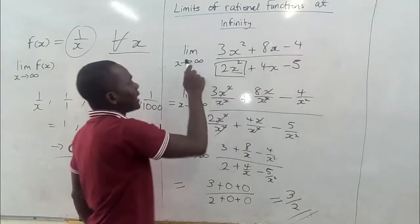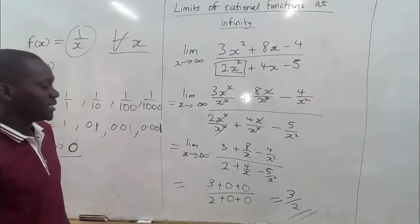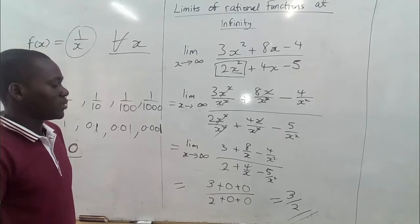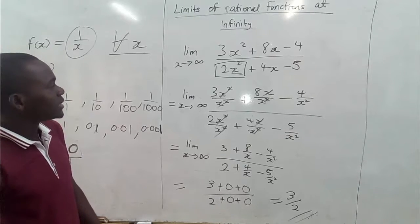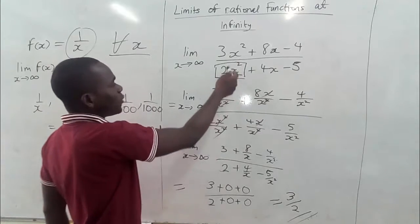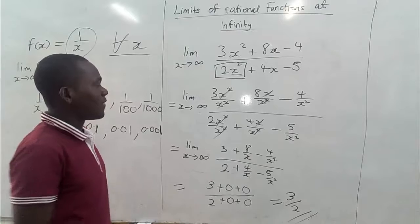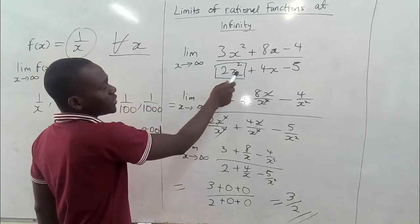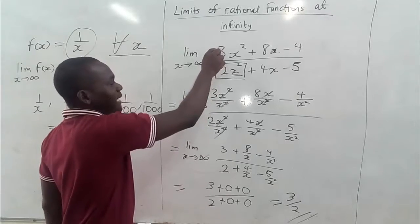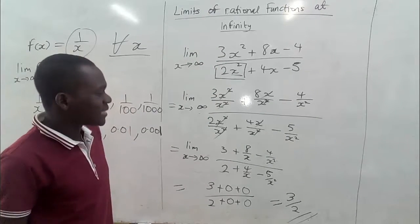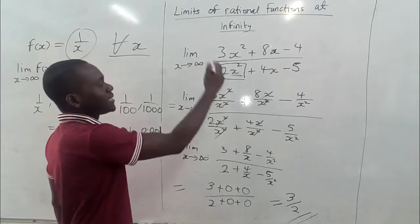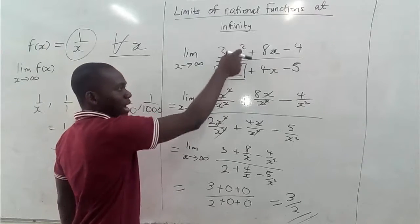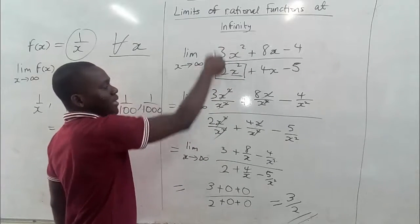Finding the limit of this entire expression as x approaches infinity gives us 3/2. Notice what this tells us: the coefficient of x² in the numerator is 3, and the coefficient of x² in the denominator is 2, and our final answer is 3/2. We can generalize that whenever the leading variable in the numerator and denominator have the same power, the limit at infinity is the ratio of their coefficients.